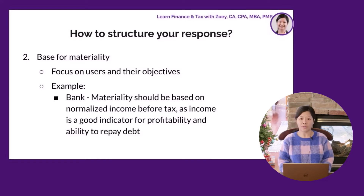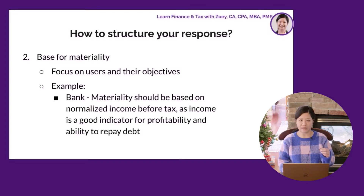The second step is to choose a base for materiality based on your users and their objectives. For example, if the bank is the primary user, materiality can be based on normalized income before tax, because income is a good indicator for profitability and the company's ability to repay any interest and principal payments.